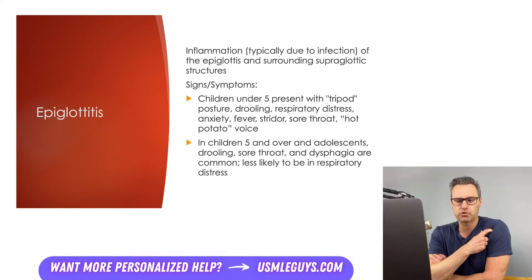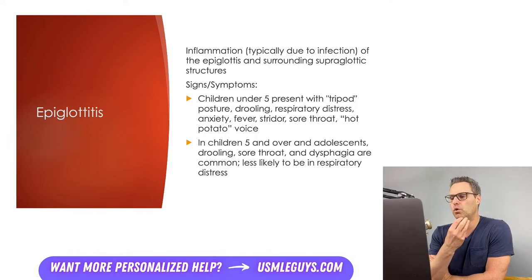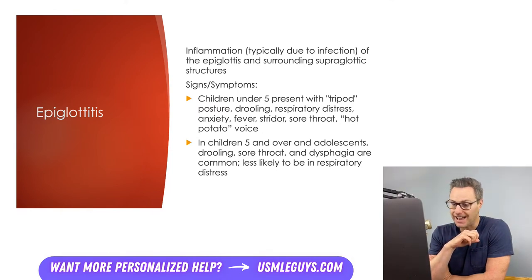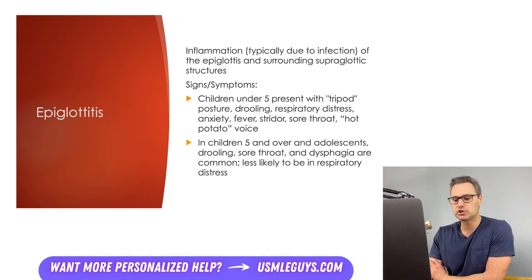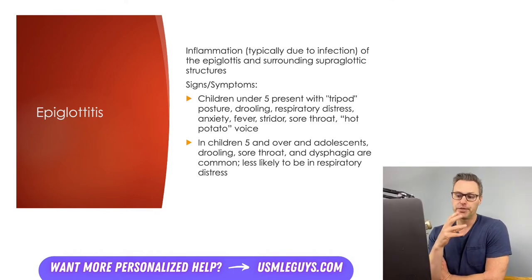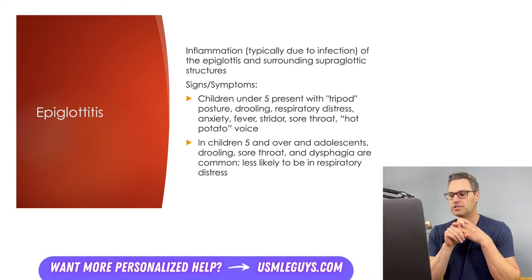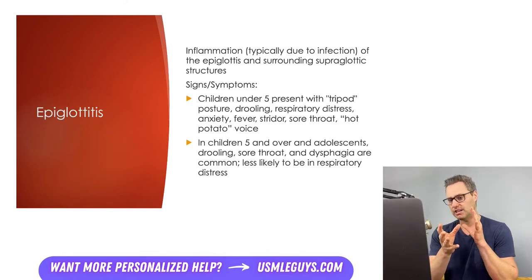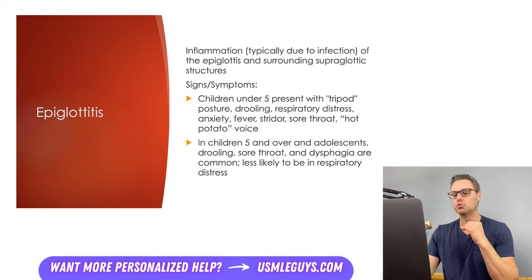Patients under five years of age will usually present with a tripod posture, characterized by a hyperextended neck, chin pushed forward, and a forward truncal lean. This position maximizes airway patency to overcome obstruction from the swollen epiglottis. The patient often tries to avoid lying down, as it can reduce patency. They often present extremely anxious and in severe respiratory distress with fever, stridor, and a sore throat. Drooling is very characteristic of epiglottitis. Notably, you typically don't see a cough in this condition, unlike in croup.